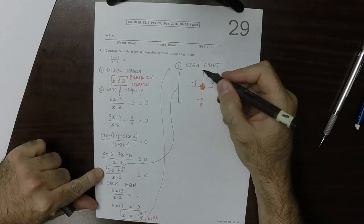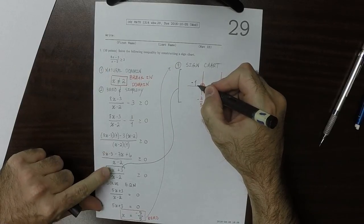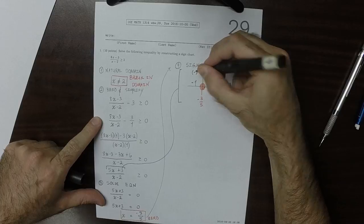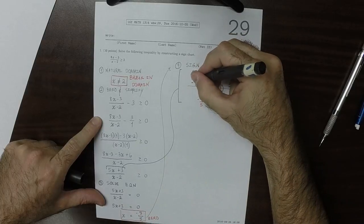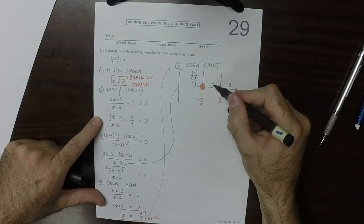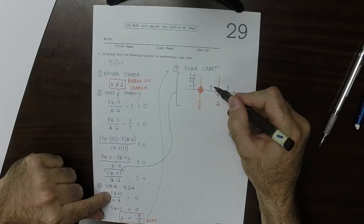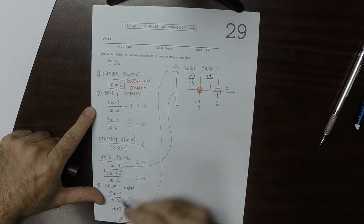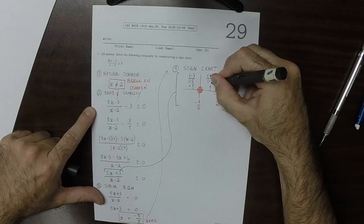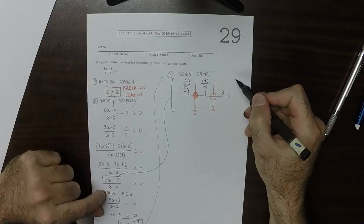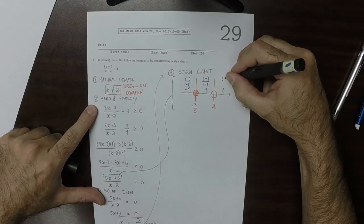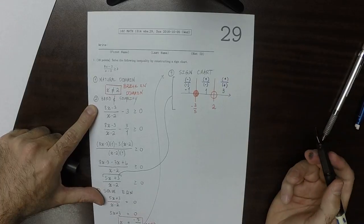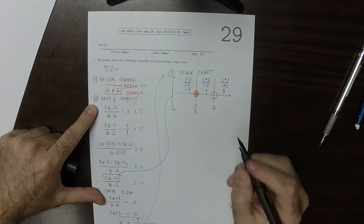So at negative 1, the numerator would be negative 5 plus 3, which is negative, so that would be negative. And the denominator would be negative 3, which is negative. The numerator in the middle would be 8, which is positive, and then divide by negative 1, which is negative. And then in the right region, the numerator would be positive, and then divide by 1, which is positive.